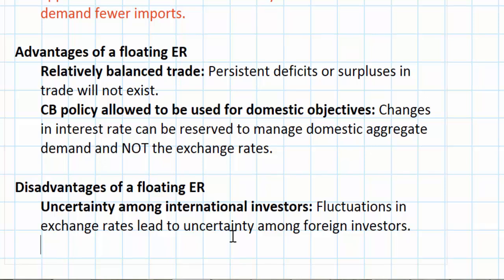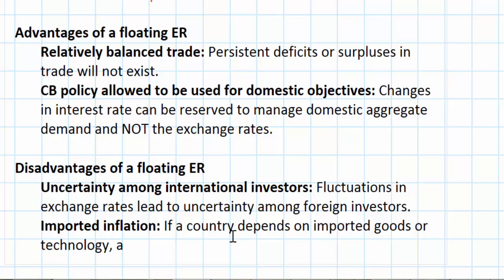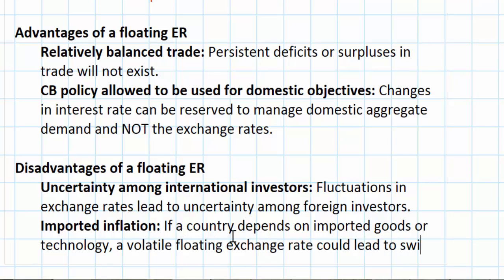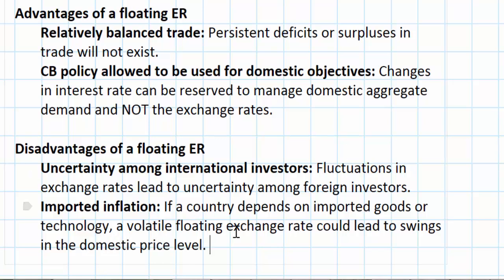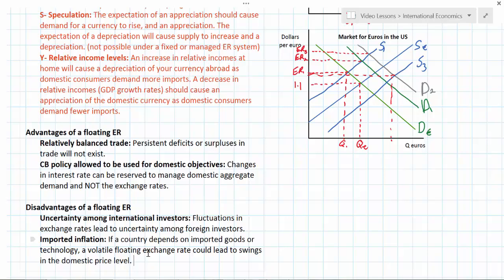A second disadvantage of the floating exchange rate system is the chance that a depreciation will lead to imported inflation. Imported inflation occurs when a currency's value depreciates against those of its trading partners unexpectedly — all imported raw materials, manufactured goods, services, and technologies would become more expensive, and the weaker currency would lead to a higher domestic inflation rate. So if a country depends on imported goods or technology, a volatile floating exchange rate could lead to swings in the domestic price level. Countries often opt for managed exchange rate systems when they prefer stability over uncertainty. For example, if a country is trying to increase its export sector, keeping the currency artificially weak through a managed or fixed exchange rate would help domestic exporters, whereas under a floating exchange rate, as demand for exports rises, the currency would strengthen and limit export sector growth.